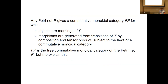Any Petri net P gives a commutative monoidal category F(P) — the free commutative monoidal category on P. Roughly speaking, the objects are just the markings of your Petri net and the morphisms are generated by the transitions of P. You can compose and tensor them but here we're freely forming all those subject to the laws of the commutative monoidal category. The morphisms are what you really care about — those are the processes you can do using the transitions.